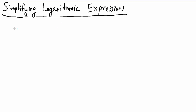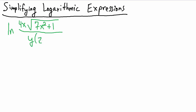In this video we're going to simplify the expression natural log of 4x times the square root of 7x squared plus 1, all divided by y times the quantity z plus 1. All of that is inside the natural log. The square brackets aren't really necessary, just like in the previous video, but they are used for clarity.